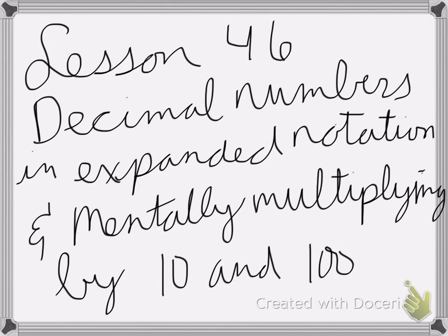All right, so lesson 46 is decimal numbers in expanded notation and mentally multiplying by 10 and 100. So I have the problem: Write 5.06 in expanded notation.